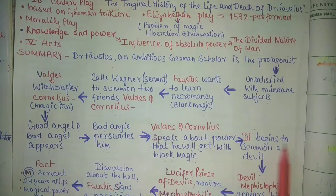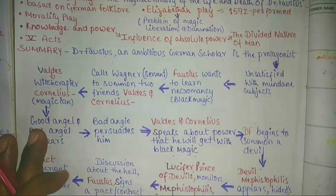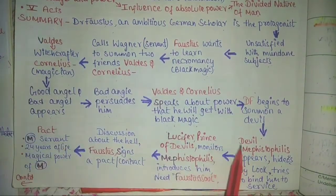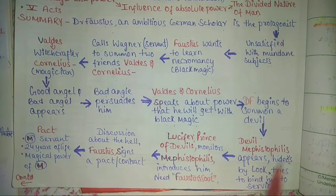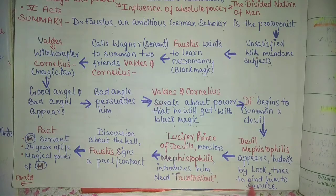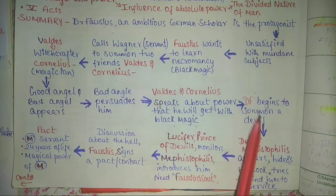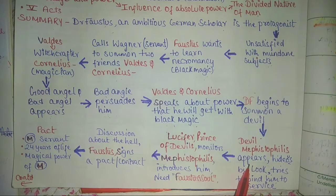Dr. Faustus begins his necromancy and starts to call a demon with all arrangements. The devil Mephistopheles appears, and by his looks he was so hideous that Dr. Faustus could not tolerate his face. Therefore, he commands him to change his appearance, and the devil does so. Dr. Faustus becomes very happy and proud that Mephistopheles is listening to him.